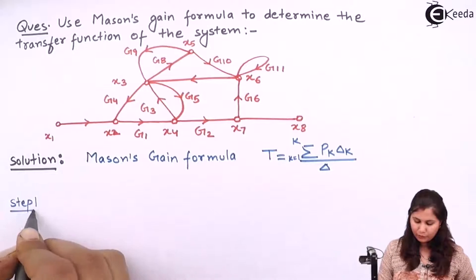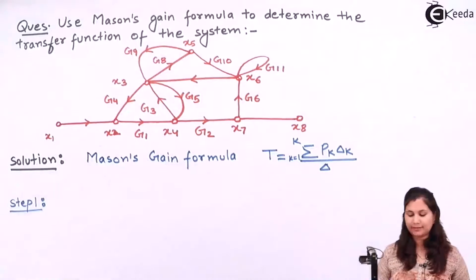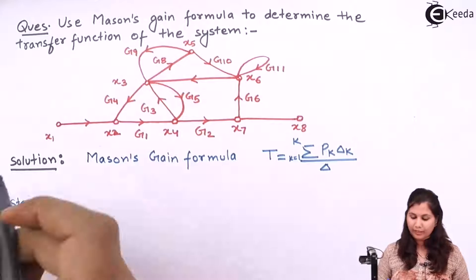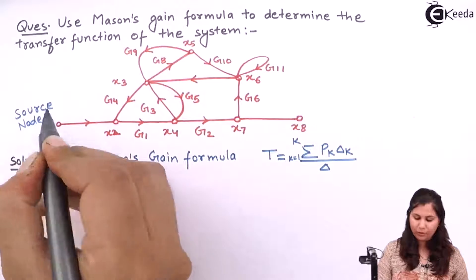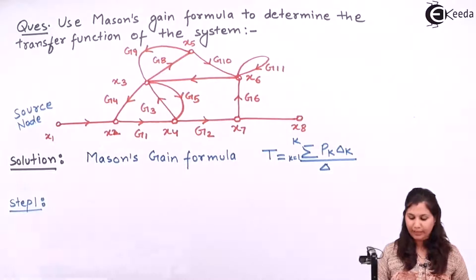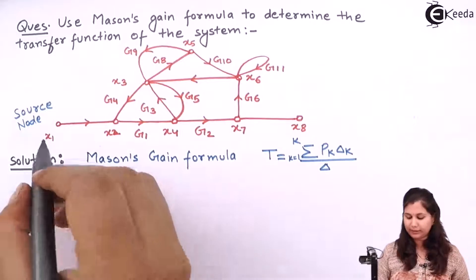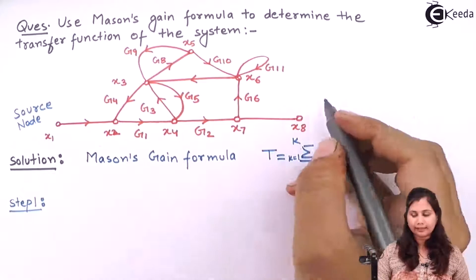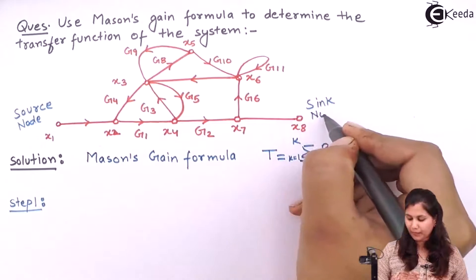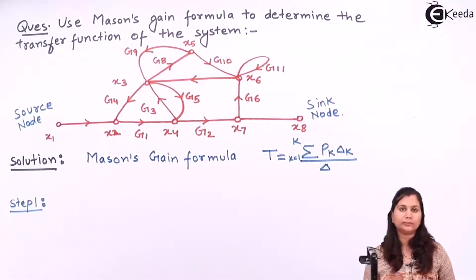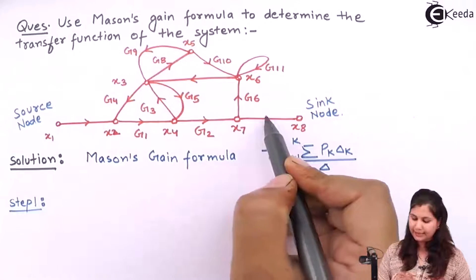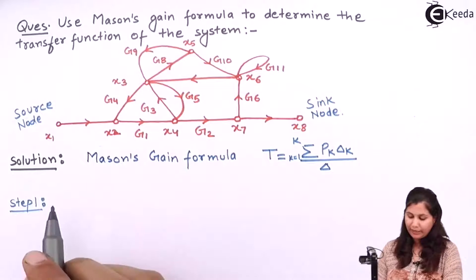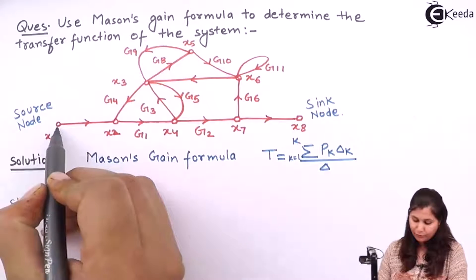Step 1 will be to find out the forward paths. A forward path is a path which starts from the source node. Here the source node is X1 because it is the input node, having all outgoing branches from it. This forward path terminates at the sink node or the output node, called sink node because all branches are incoming towards it — that is X8.